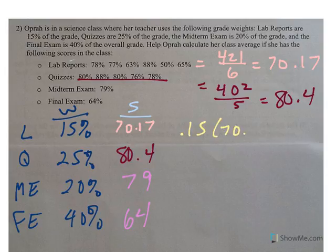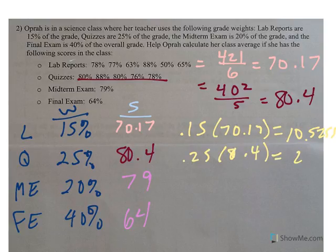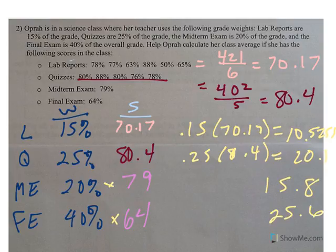So .15 times 70.17. And I'm going to get a score of 10.5255. Then I'm going to take .25 and multiply by 80.4 and get 20.1. Then I'm going to multiply 20% times 79 and get 15.8. And 40% times 64 and I get 25.6.